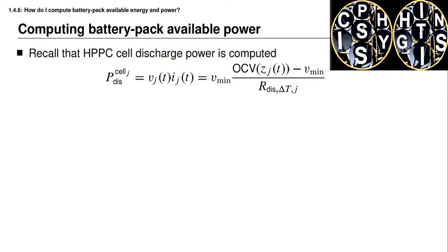In the previous lesson, you learned how to compute individual cell available energy and available power. The available energy computation was quite straightforward, but the available power calculation required a little bit more development. In this lesson, you're going to learn how to compute battery pack available power and available energy instead — that is, for a battery pack that comprises many cells wired together. Computing available power for the battery pack is quite straightforward after you've learned how to compute the power for a single cell. Computing available energy involves a bit more of a thought process, but in the end it's still not very difficult.